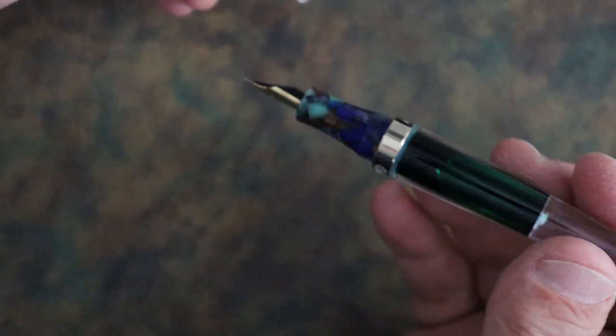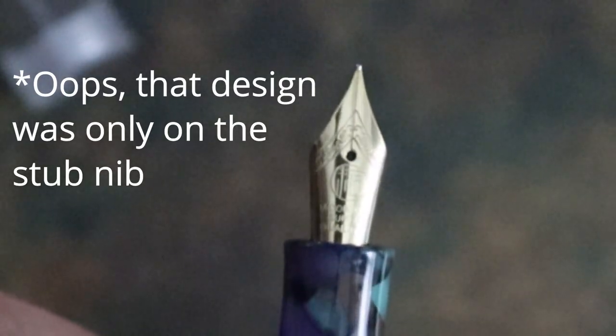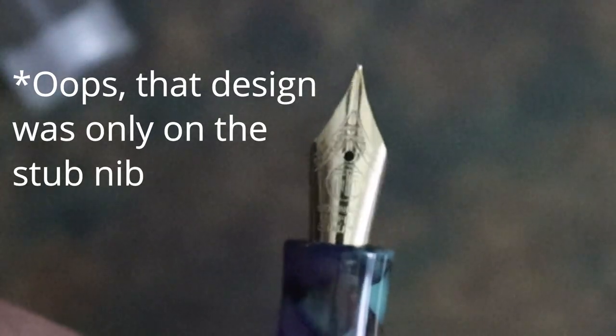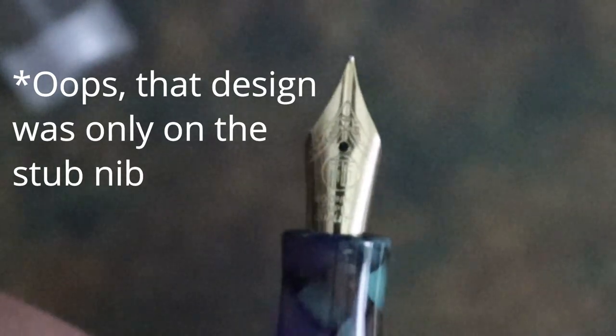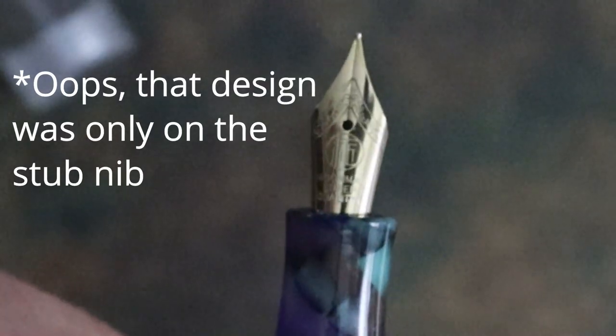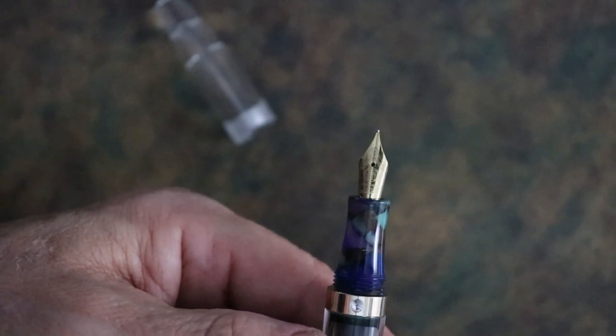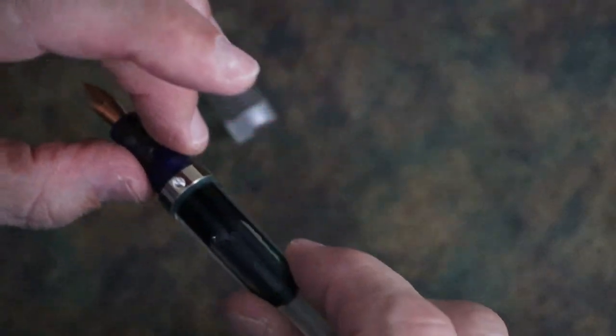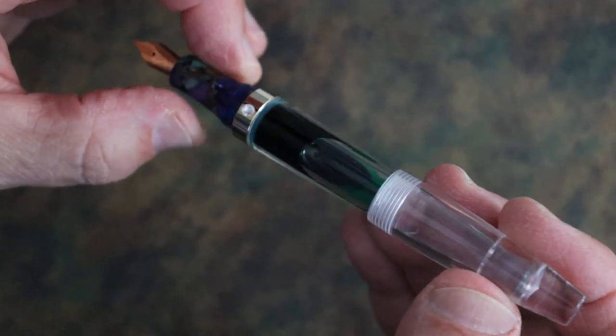Obviously the filling system is eyedropper. It is a number five nib. It has a lotus flower on there, as far as I could tell, with this crescent and circle with the crescent. I think that has something to do with fertility, but anyway, that's the design on the nib. And this I got as a fine, but it's kind of almost an extra fine I think. Is it postable? Yes it is.